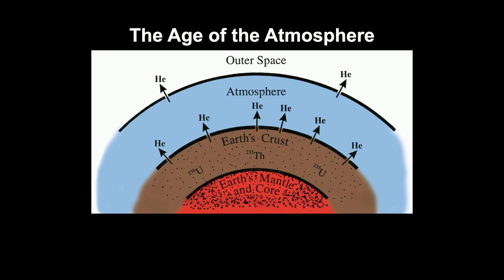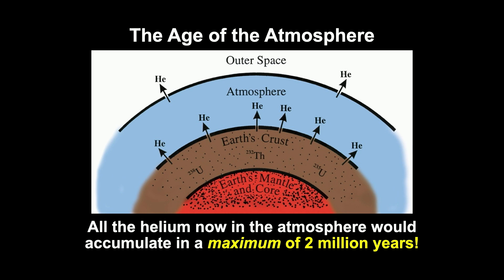Helium is produced from radioactive decay elements in the Earth. The helium atom is very small and can wiggle through the crystalline structure of rock into the atmosphere, where some escapes into space. But the amount going in exceeds the amount leaving. Studies show that all the helium now in the atmosphere, based on known rates using evolutionist assumptions about constant rates, would accumulate in a maximum of two million years — yet evolutionists say the atmosphere is billions of years old.